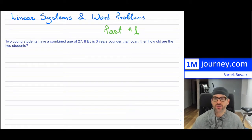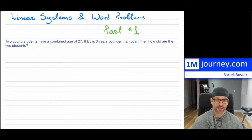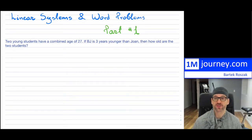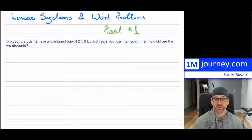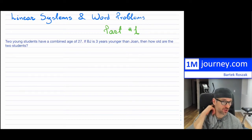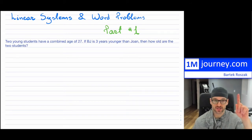Here is the first word problem: two young students have a combined age of 27. If BJ is three years younger than Joanne, how old are the two students? I did a short video on transforming statements into math — I'll put a link above if you find it useful. I'll also assume you know substitution or elimination to solve these problems, and I'll put a link to the substitution video above.